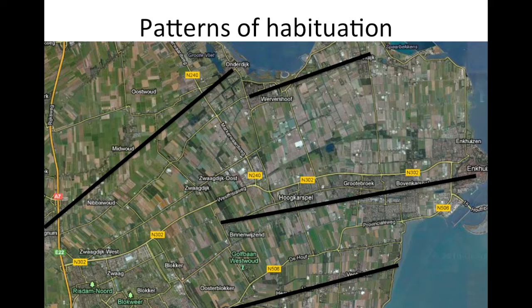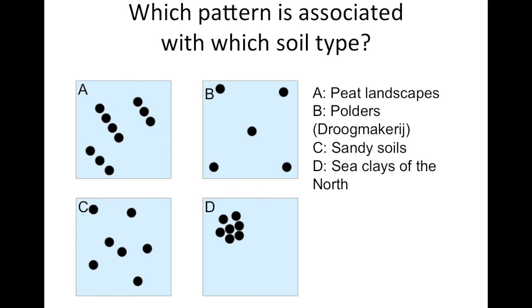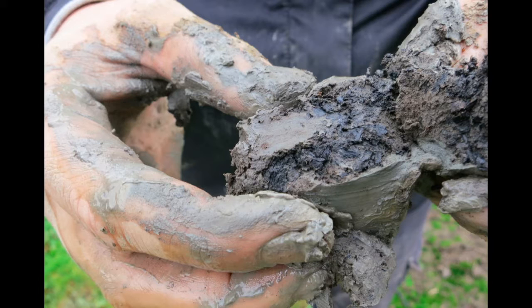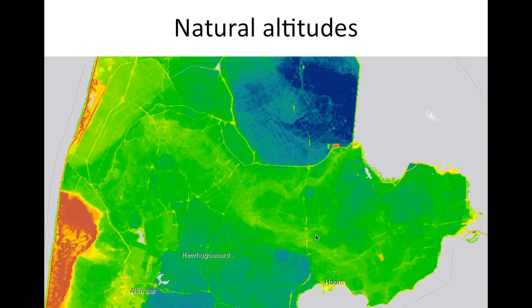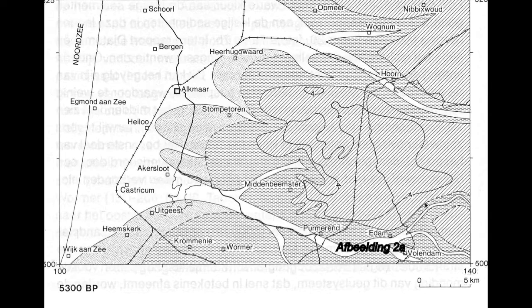We have an area that suggests a swampy landscape — toponymy and settlement patterns both point to it. Yet if I start digging in the soil, I don't find peat — I find sea clay. And if I look at the altitude map of West Friesland, there is a clear difference in natural altitudes: very low over here, very low over there, and then a creek ridge — the creek ridge of the Zijpen, all the way over here.